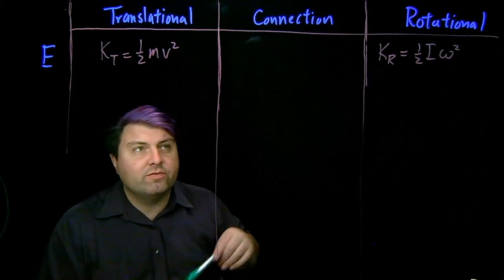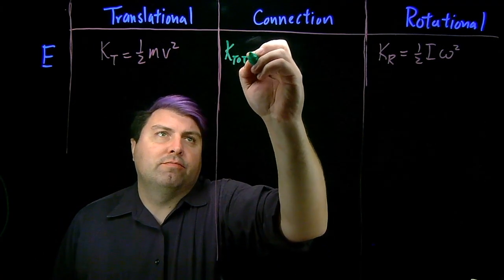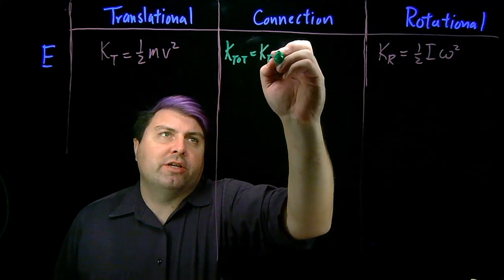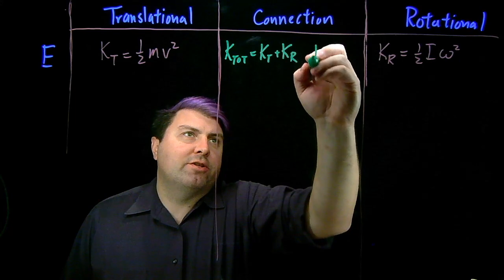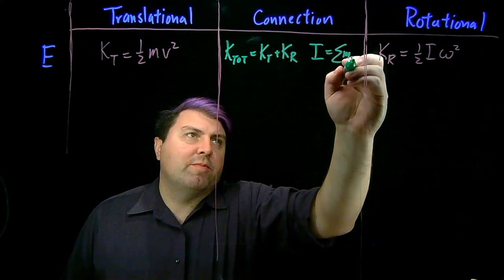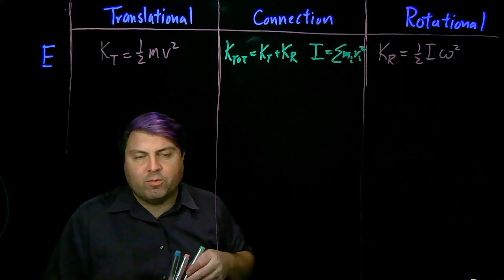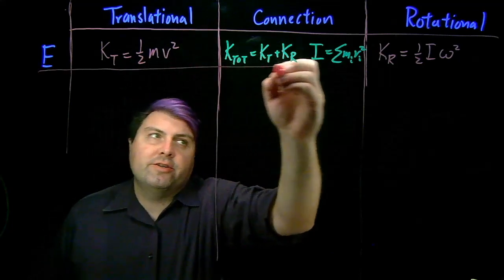Our connection for this is that we have that our K total is our K translational plus our K rotational. We also have a definition of moment of inertia is the sum of m sub i r sub i squared, but we usually use a table to find this. So that's our energy.